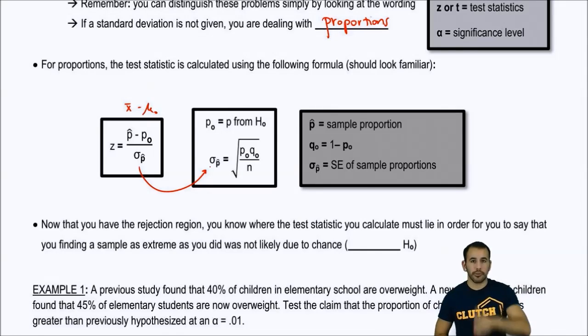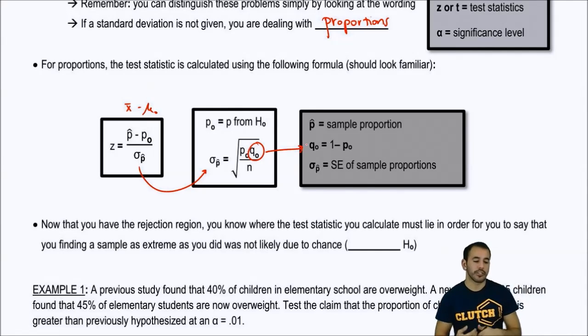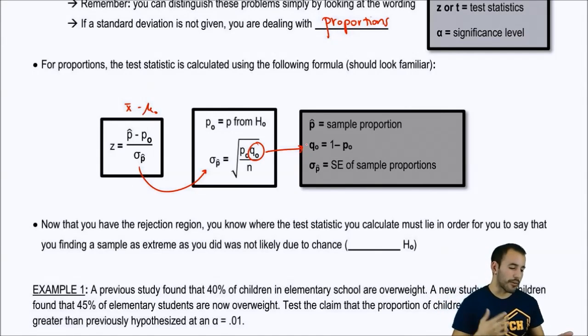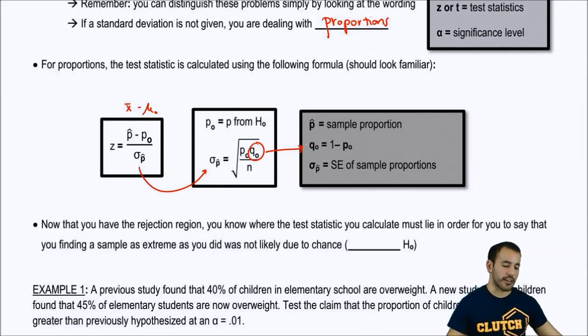And so, it's the square root, all this under the square root. The proportion, I guess, of success is kind of going back to the binomial stuff. But the p from the null hypothesis, the q from the null hypothesis is just 1 minus that p. So, here we are with that equation. And then, all over this is the sample size. So, again, we have a breakdown here on the right-hand side of p hat is the sample proportion, q naught is 1 minus p naught, and this is all based off of the null hypothesis, and then our standard error.